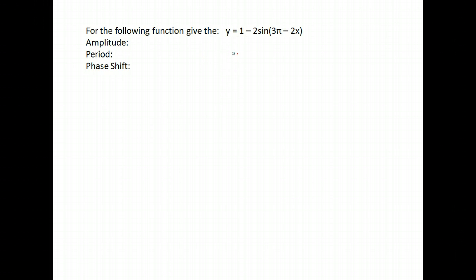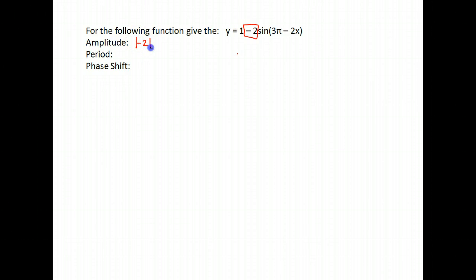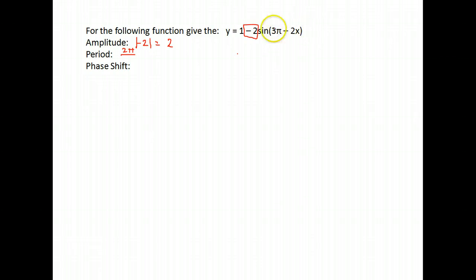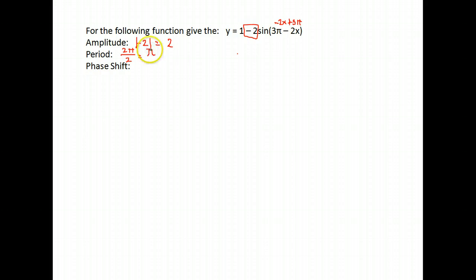Here we go again — amplitude, period, and phase shift. For amplitude, sine has a negative 2 in front of it, so the amplitude is the absolute value of negative 2, which is 2. For the period, we take the normal period for sine, which is 2π, and divide by the number directly in front of our x. Notice this one is written in reversed order. The number directly in front of x is negative 2 — we just worry about the 2. So 2π divided by 2 gives us π.